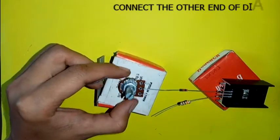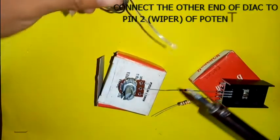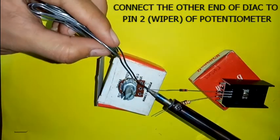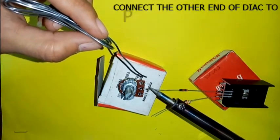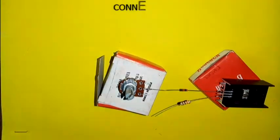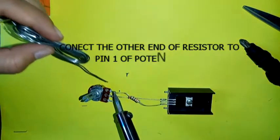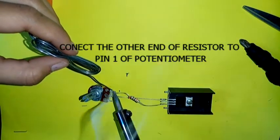Connect the other end of the diac to pin 2 or wiper of the potentiometer. Connect the other end of the resistor to pin 1 of the potentiometer.